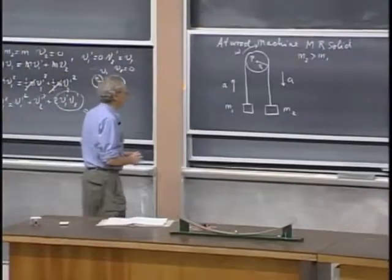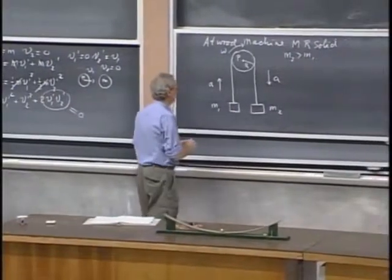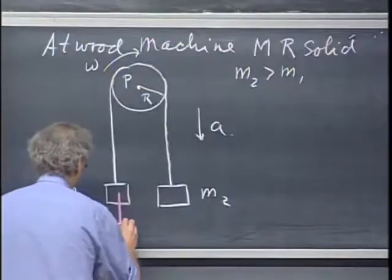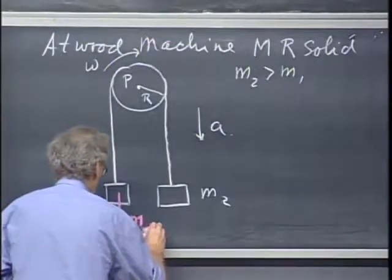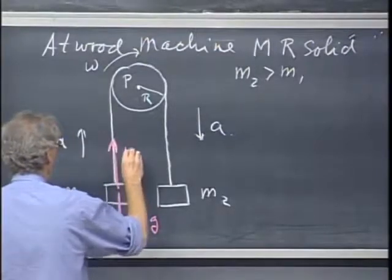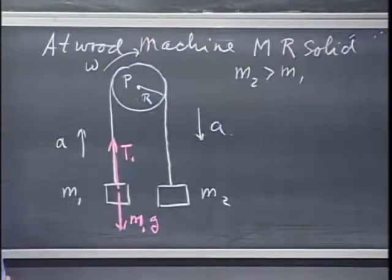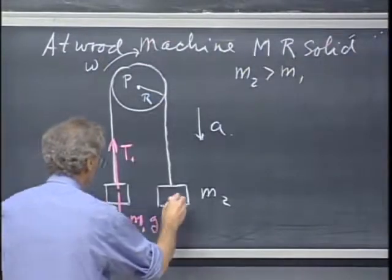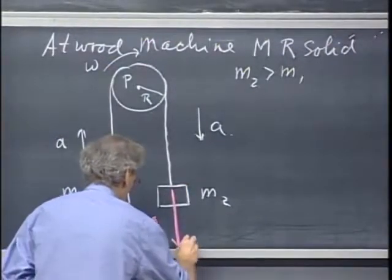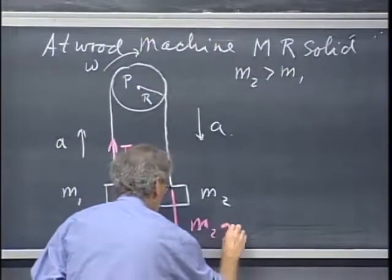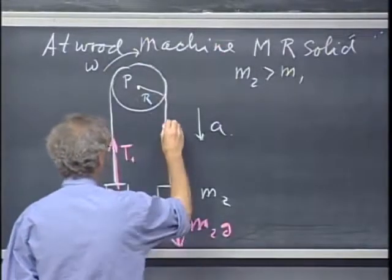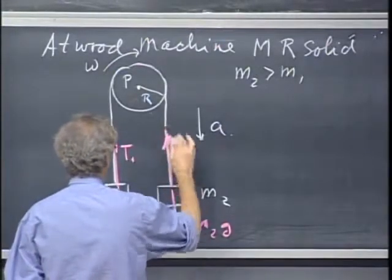Now the first thing we want to do is make up free-body diagrams. Free-body diagrams for this one is easy: m1g down and T1 up. For this one, we have m2g down and T2 up.